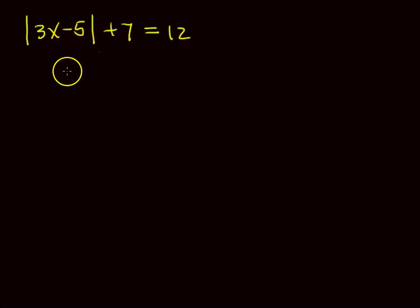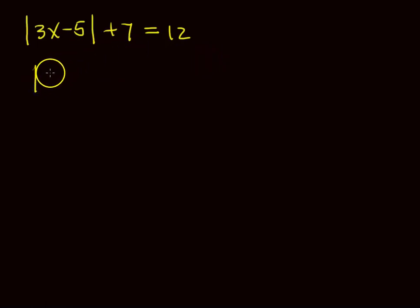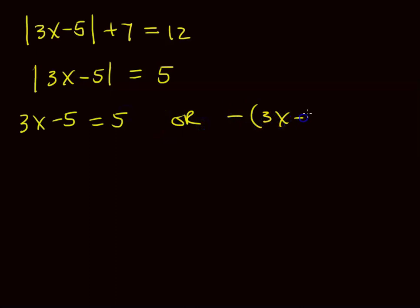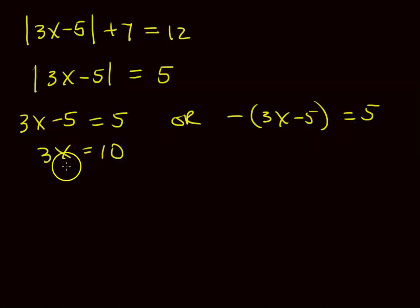To solve this, first you want to get it into the form we just looked at — the absolute value on the left and everything else on the right. So we'll subtract 7 from both sides, and subtracting 7 gives us 5 on the right. Now we use what we just learned. Either 3X minus 5 equals 5, or the opposite of 3X minus 5 equals 5. For the left side, add 5 to both sides: 3X equals 10, so divide both sides by 3 and X equals 10 thirds.